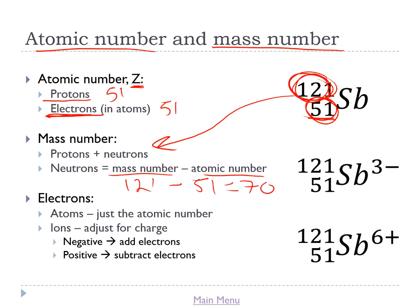For atoms, the number of electrons simply equals the atomic number. For ions, you must adjust for the charge — an ion is an atom that has gained or lost electrons. Negative ions have gained electrons; positive ions have lost electrons. To calculate electrons in an ion, take the atomic number and subtract the charge. For antimony 3-, that's 51 minus (-3) = 54 electrons. For antimony 6+, it's 51 minus 6 = 45 electrons.